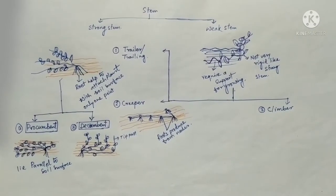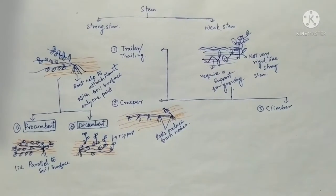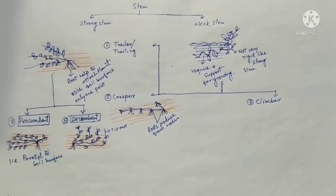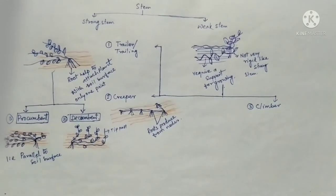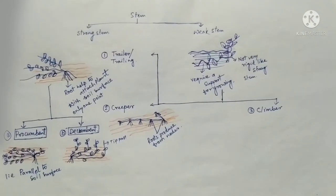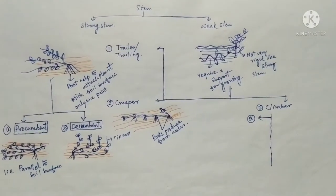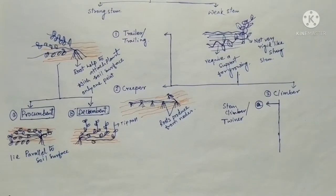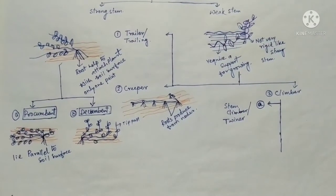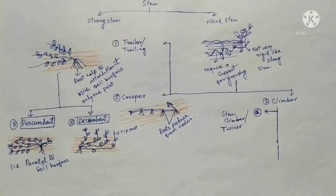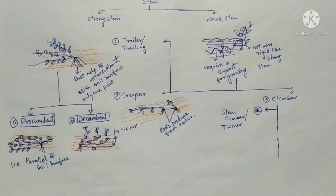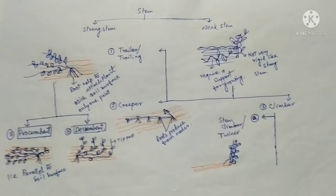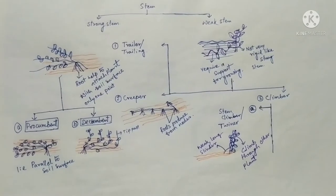The next type is climber. There are a total of eight types of climber stems. The first is stem climber or twiner. Here the plant stems are weak, cylindrical, and very long, and they climb through other objects.